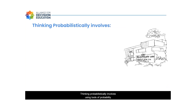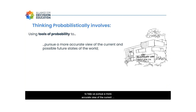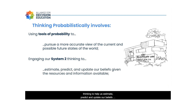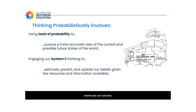Thinking probabilistically involves using tools of probability to help us pursue a more accurate view of the current and possible future state of the world. When we utilize and practice probabilistic thinking skills, we engage our slower, more deliberate System 2 thinking to help us estimate, predict, and update our beliefs to the best of our ability, given the information and resources available. And in so doing, we can address uncertainty intentionally and rationally.